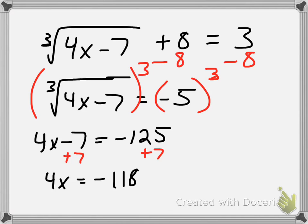I'll continue to solve for x by dividing by 4. So I have x equals negative 118 over 4. I can reduce that, since both are even numbers. I can reduce by 2. I will get negative 59 over 2.